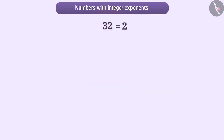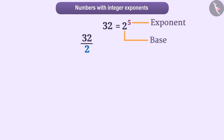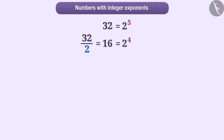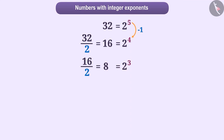We can express 32 as 2 to the power 5, where 2 is the base and 5 is the exponent. If we divide 32 by the base 2, we get the number 16, which we denote by 2 to the power 4. As you can see, the exponent is reduced by 1 once the number is divided by 2. Similarly, if we divide 16 by 2, we will get the number 8, which is in the exponential form 2 to the power 3. Here also you can see that the exponent has decreased by 1.